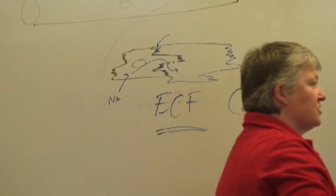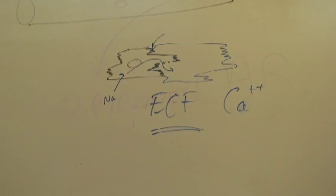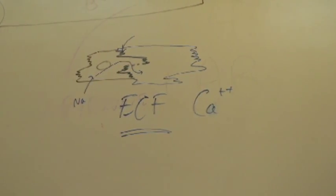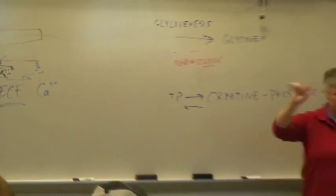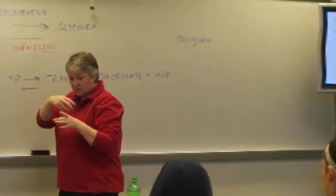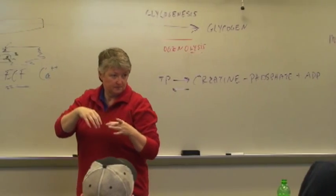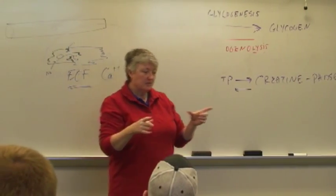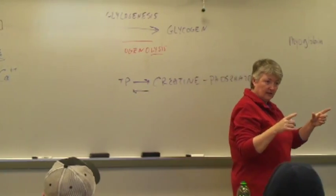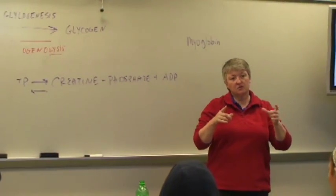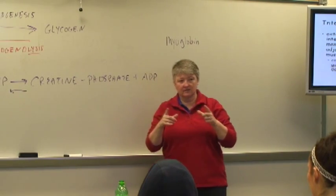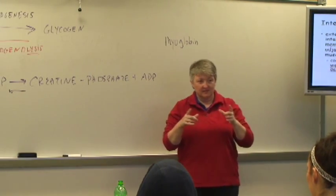Gap junctions are essentially electrical synapses. If you take two cardiac muscle cells and put them in a petri dish with some physiological solution, they will initially contract on their own and each have their own little rhythm. But within just a few seconds they will begin to contract together, because the ions that are moving will synchronize the two cells — even though they're not even physically touching.